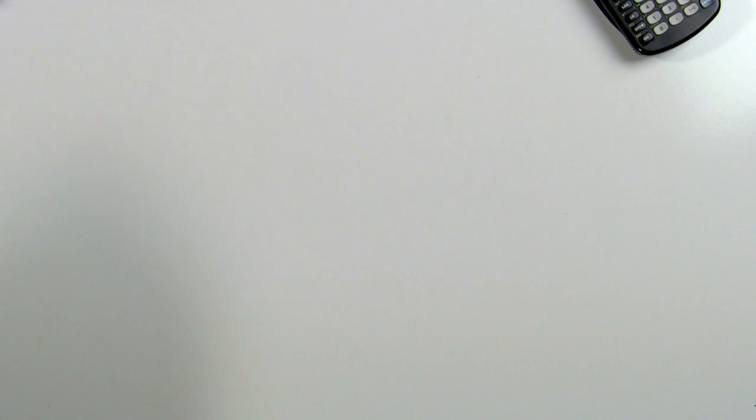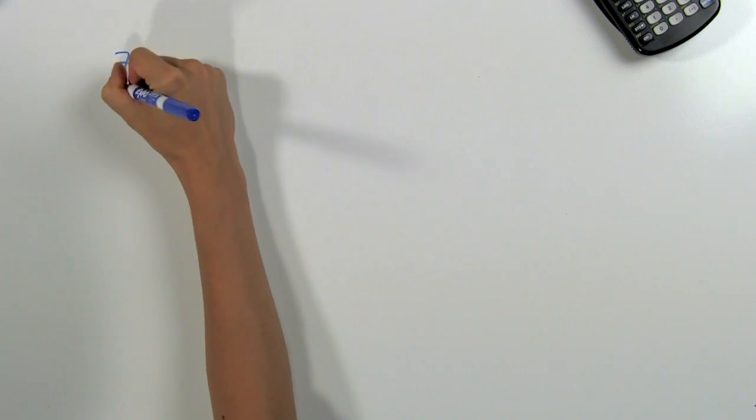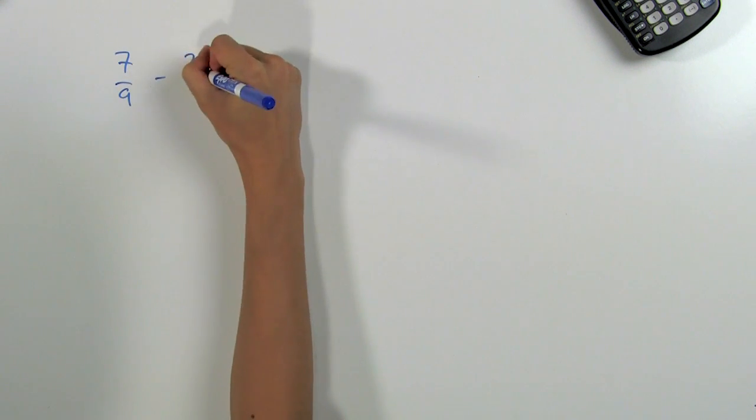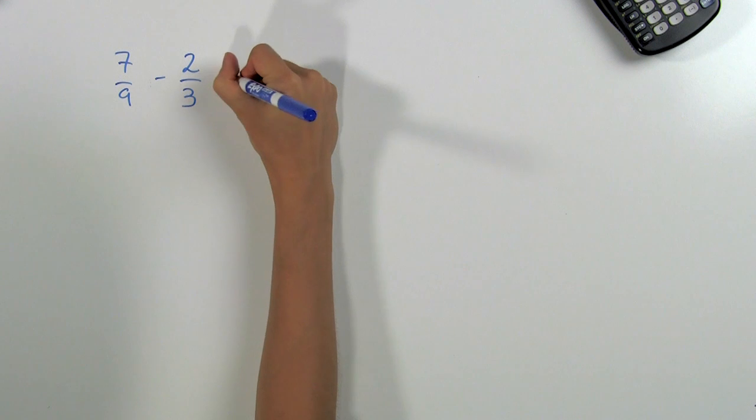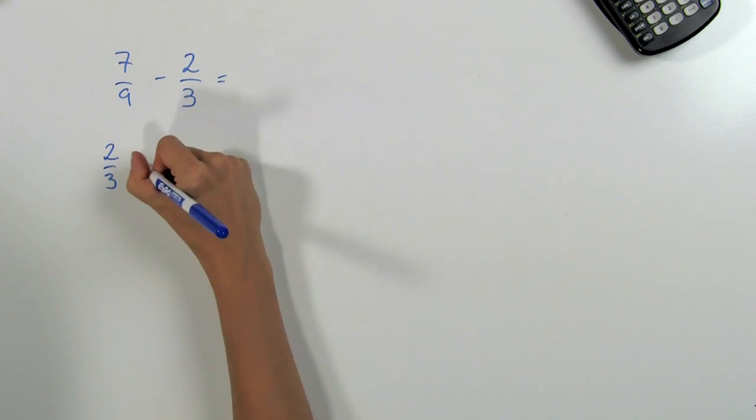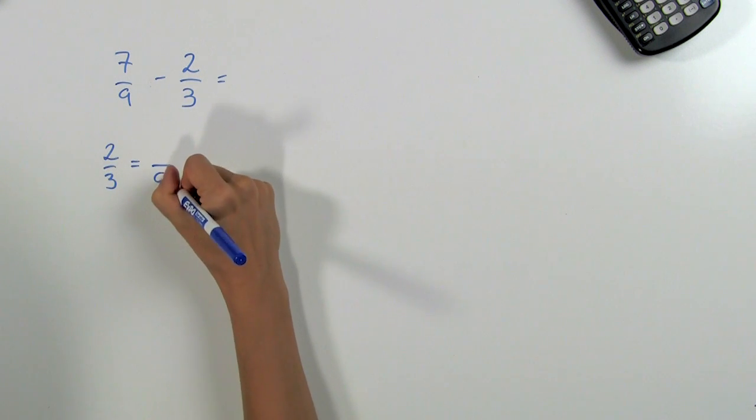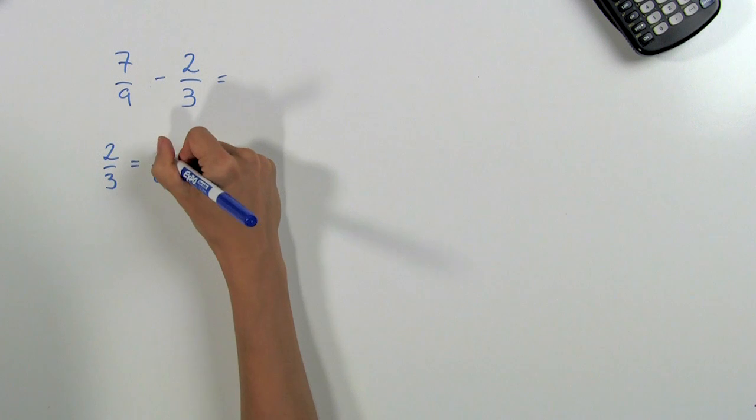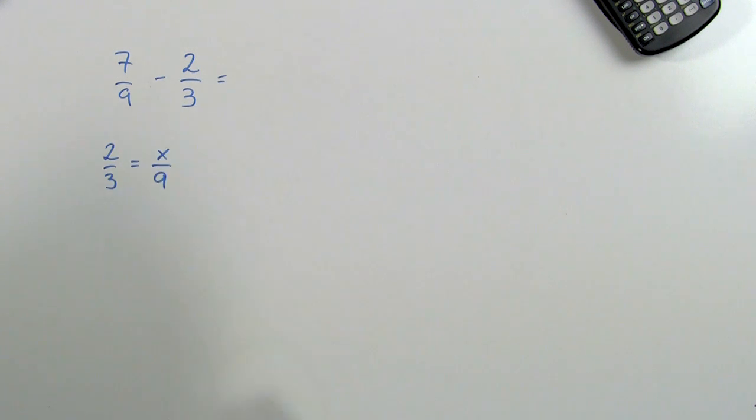Now let's do another example with subtraction. Suppose we need to subtract 7 ninths minus 2 thirds. Again, we can use cross multiplication to find a common denominator. We have 2 thirds, and we want to find a fraction equal to that with a denominator of 9. So we can call this x and use our cross multiplication.